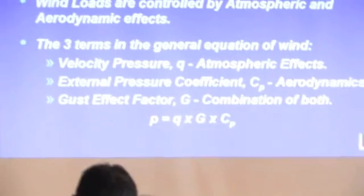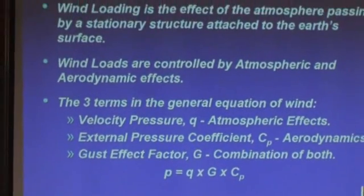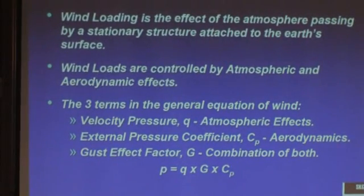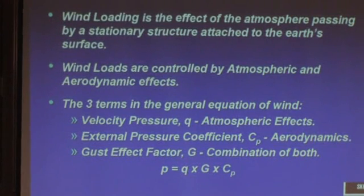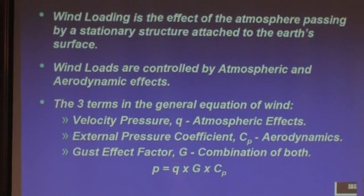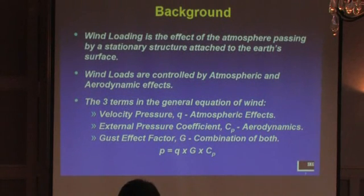You will see in ASCE 7 that we ultimately come down to this equation. The pressure due to wind, lowercase p, is given in ASCE 7 as a product of a lowercase q, which is called the velocity pressure, then a gust effect factor G, and then an external pressure coefficient C sub p.